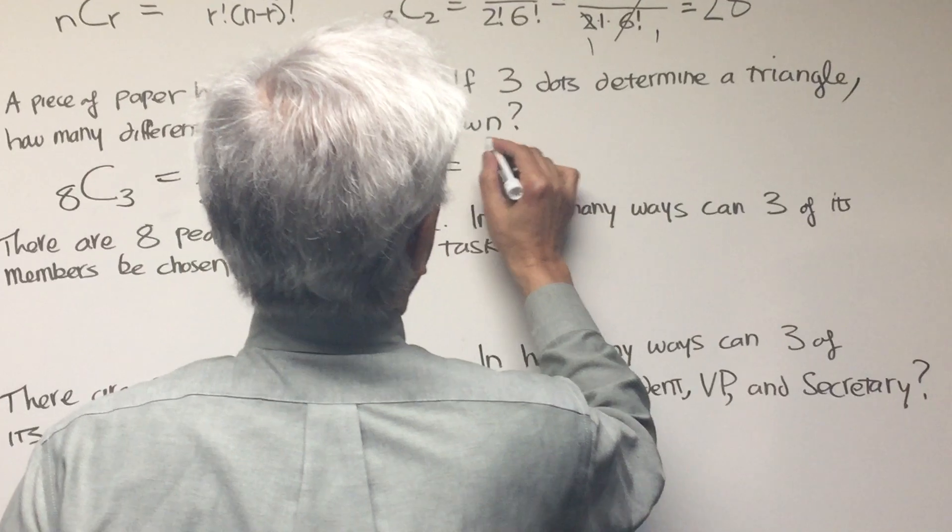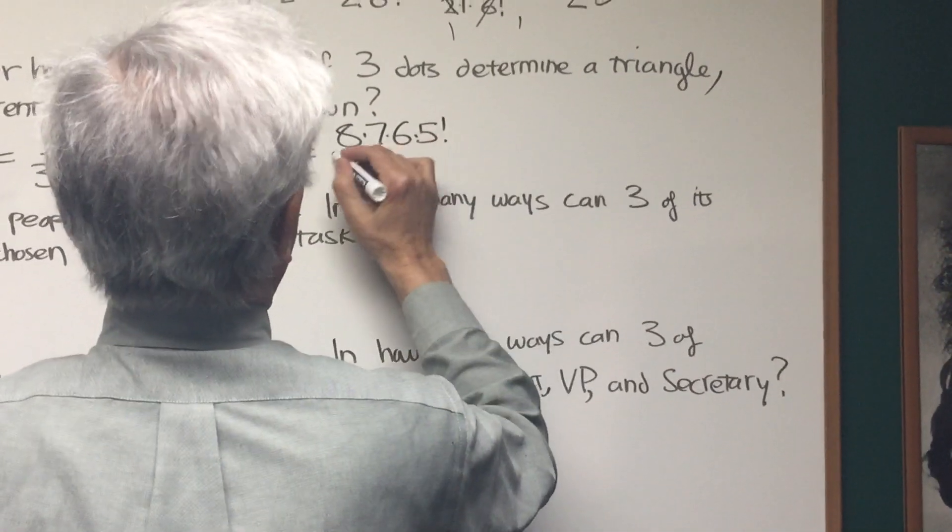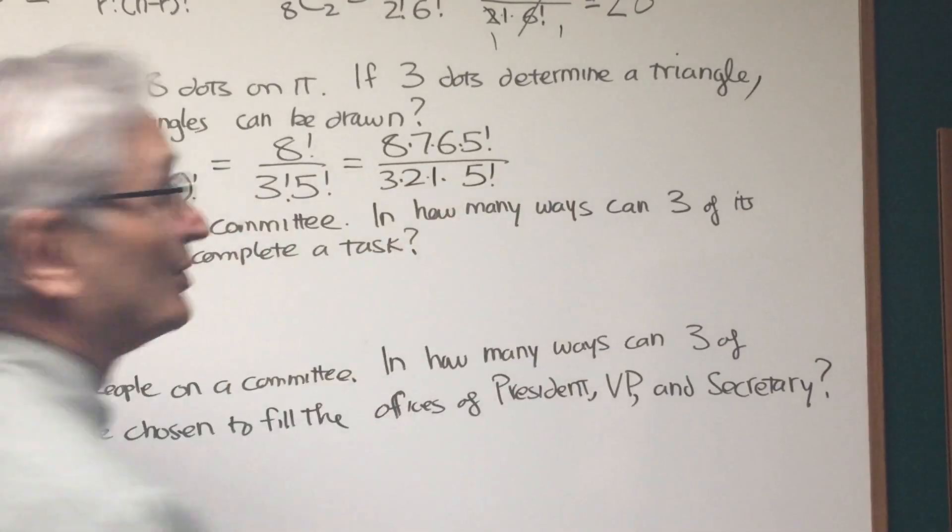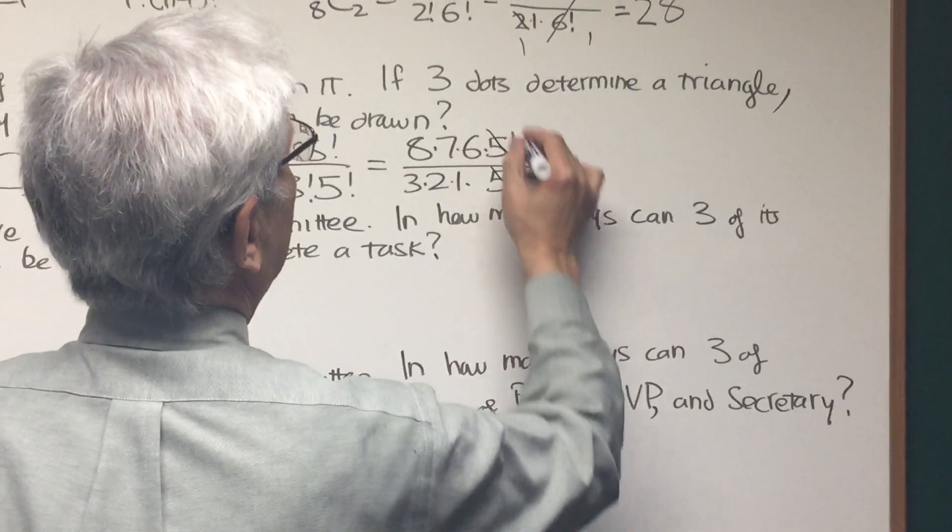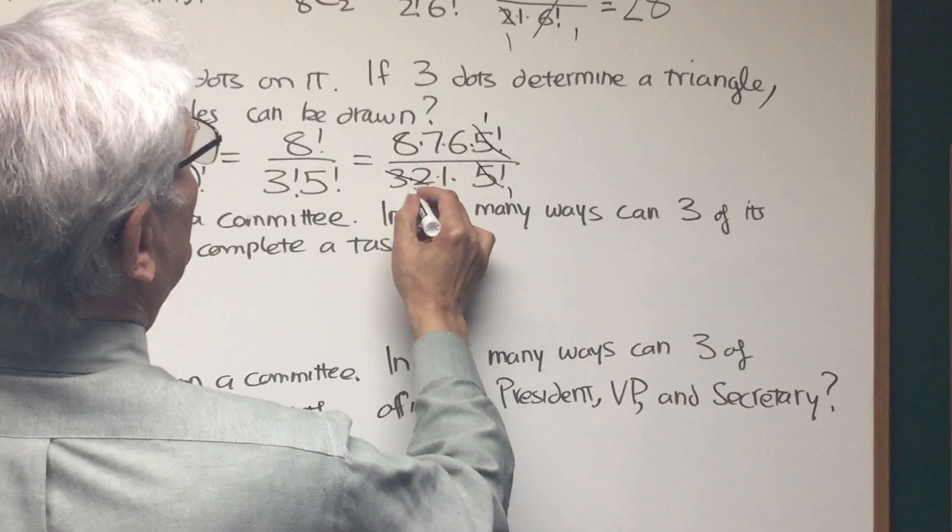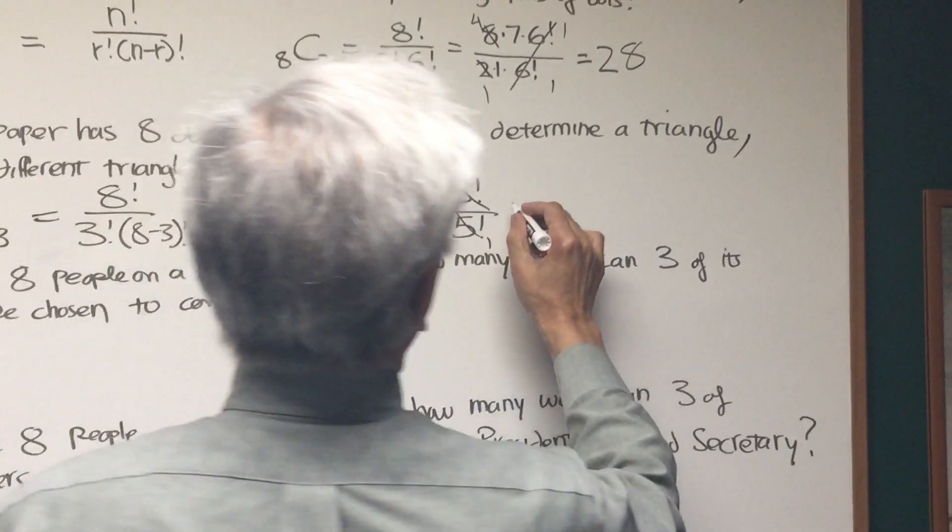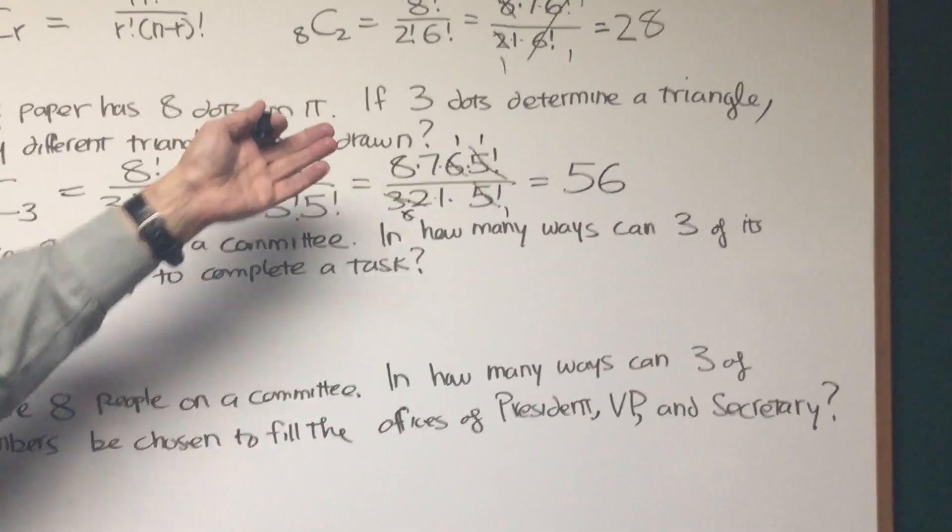So if we figure this out, this is going to be eight times seven times six times five factorial. And this is three times two times one times five factorial. You can see a lot of things cancel out here. The five factorials cancel out. Three times two is six, and that cancels out with the six in the numerator. Seven times eight is 56. So it's exactly twice the value of the previous problem.